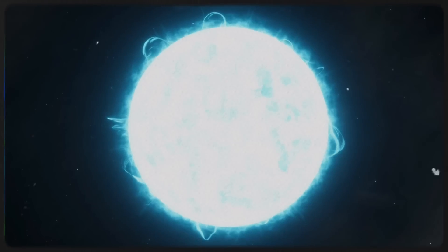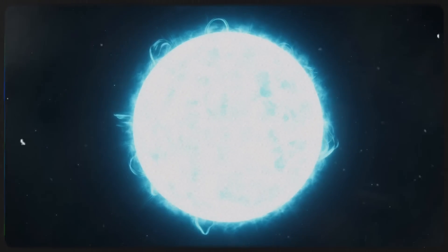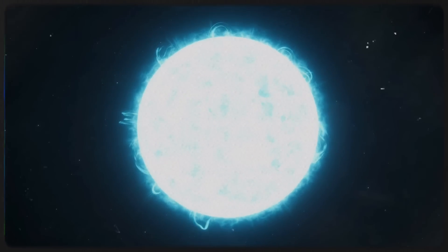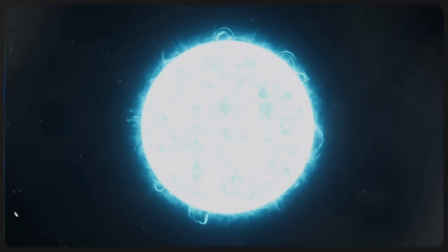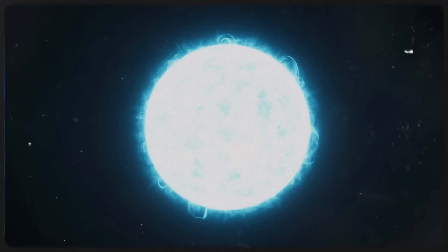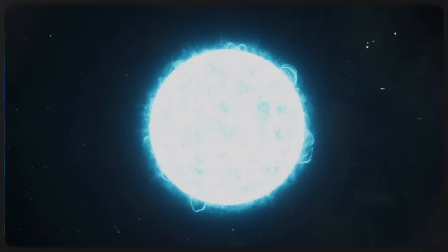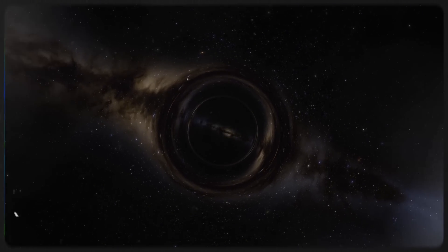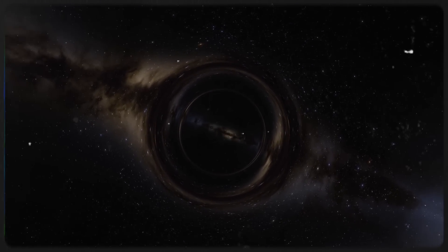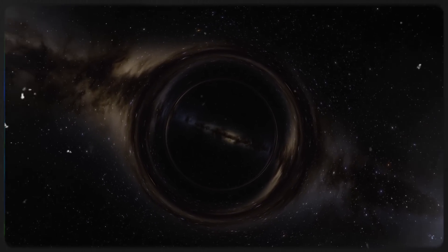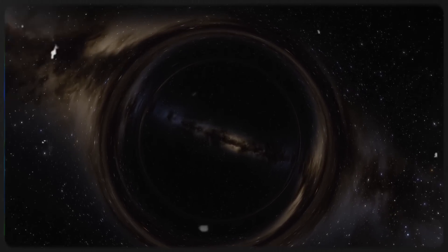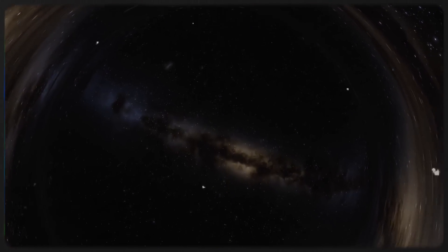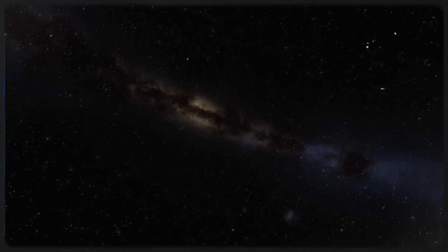In another extraordinary achievement, the telescope captured light from a massive star located an astonishing 28 billion light-years away, the most distant individual star ever observed. This remarkable feat was made possible through a natural phenomenon known as gravitational lensing, in which the immense gravity of a foreground galaxy acted as a cosmic magnifying glass, bending and amplifying the star's light to make it visible from Earth.